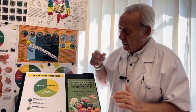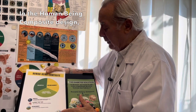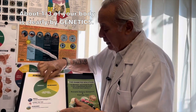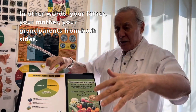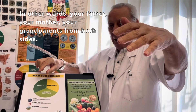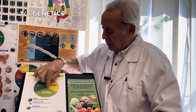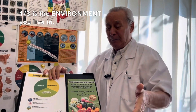So is diabetes genetic? We answer it this way in the composite we've designed. About one-third of your body is created by genetics — in other words, your father, your mother, your grandparents from both sides. One-third is genetics.